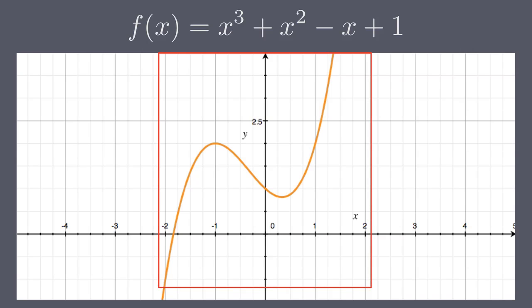On this range, we can see that the function is at its highest at x equals two and at its lowest at x equals negative two. Because the function is higher at x equals two than anywhere else, you can say that x equals two is its global maximum on this range. Similarly, because the function is lower at x equals negative two than anywhere else, you can say that x equals negative two is the global minimum.